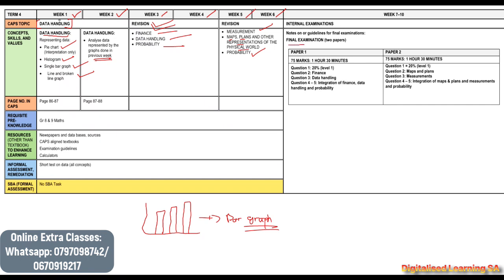The final examination consists of two papers — paper 1 and paper 2. Paper 1 will consist of finance, data handling, integration of finance which will also include data handling, and probability. Paper 2 will focus on maps and plans, measurements, and also the integration of maps and plans and measurements together with probability. You can see that probability appears on both papers.